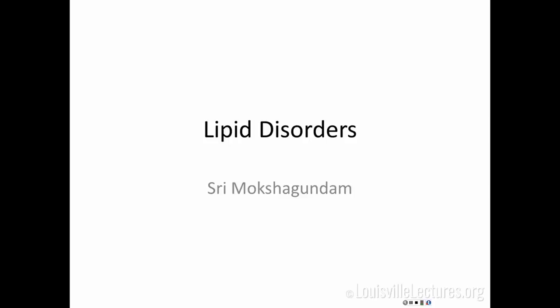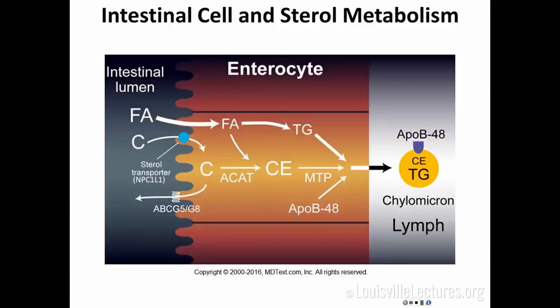Cholesterol and lipids have two sources: endogenous production of cholesterol and triglycerides, and exogenous sources. The important thing is that the transport of these is an active process. Cholesterol is transported by a steroid transporter protein into the intestinal cells. There are known mutations in this protein that can cause disorders of liver metabolism, and the drug ezetimibe (Zetia) works by blocking this particular protein — that is how it reduces cholesterol levels.